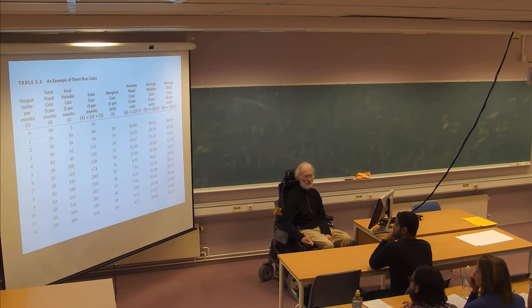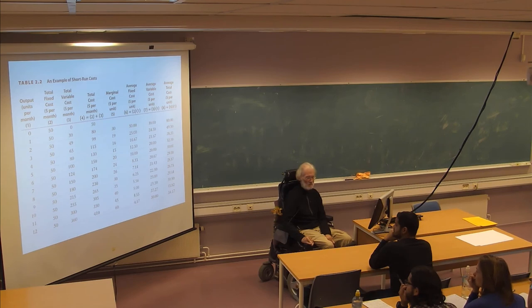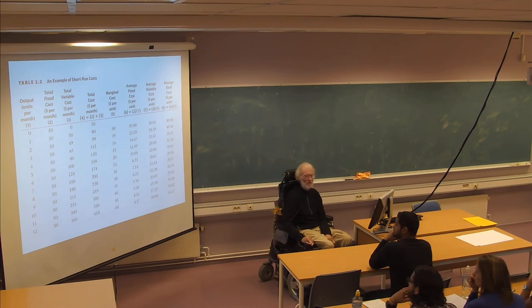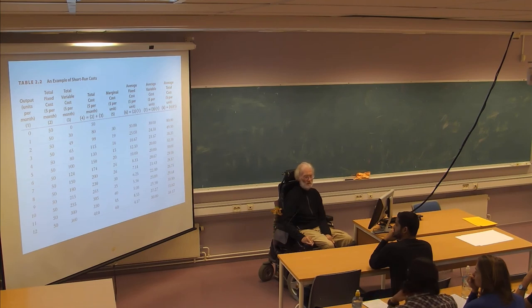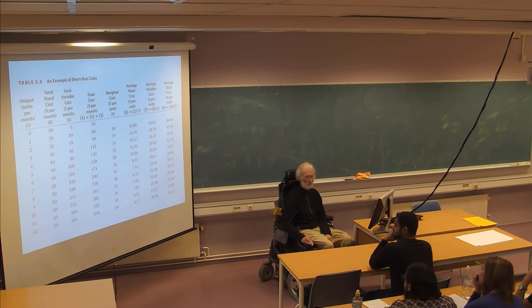Now to the very important marginal cost concept. What is meant by marginal cost? That is the extra cost when you go from 1 unit to 2. How much is the extra cost when you increase from 1 to 2? It's 49 minus 30, which is 19. If you go from 7 to 8, the marginal cost is 30. So marginal cost is dollars per unit when you produce an extra unit.